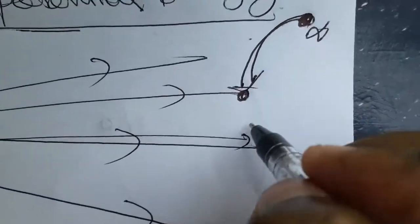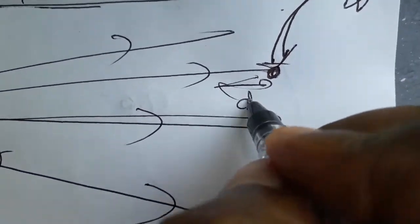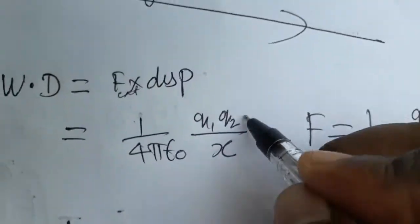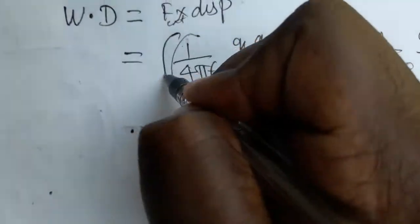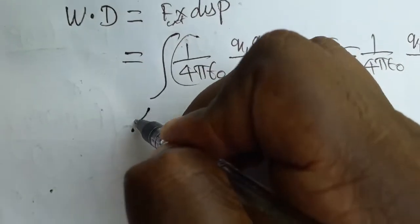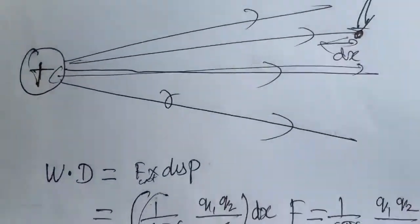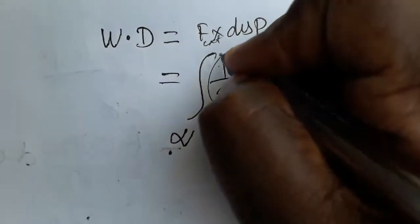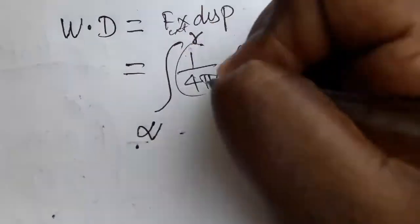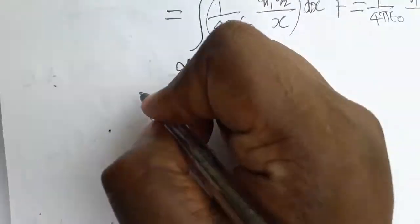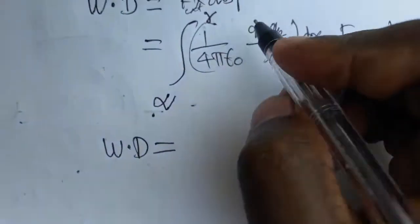I am taking the displacement as a small distance dx. We are bringing the charge from outside the field to inside — from infinity to distance r. So work done is set up as an integral over that path.